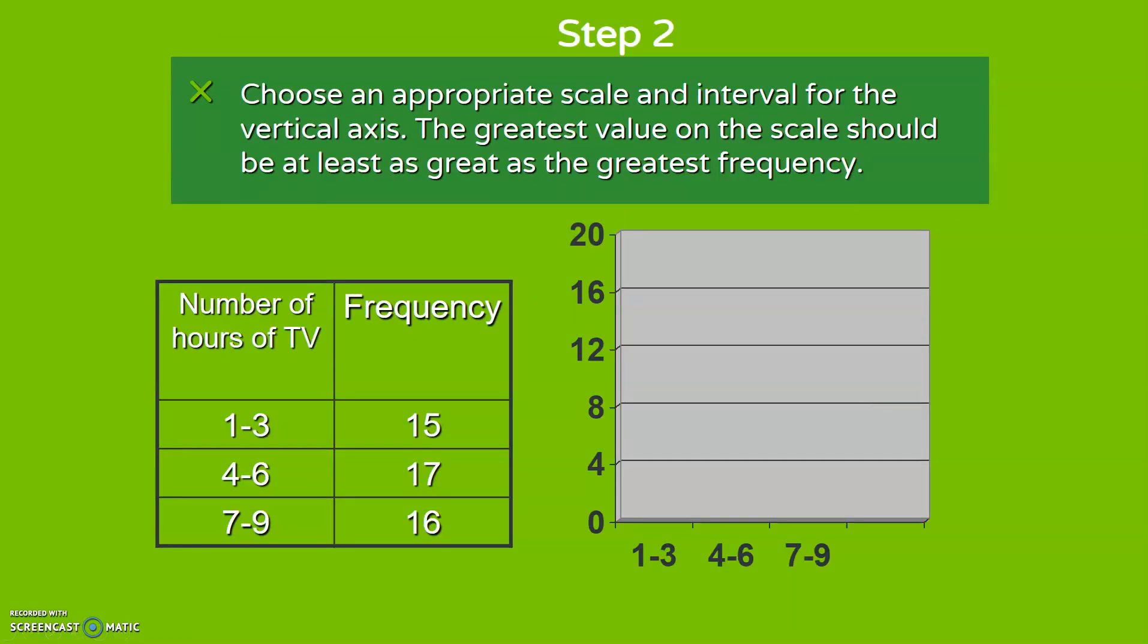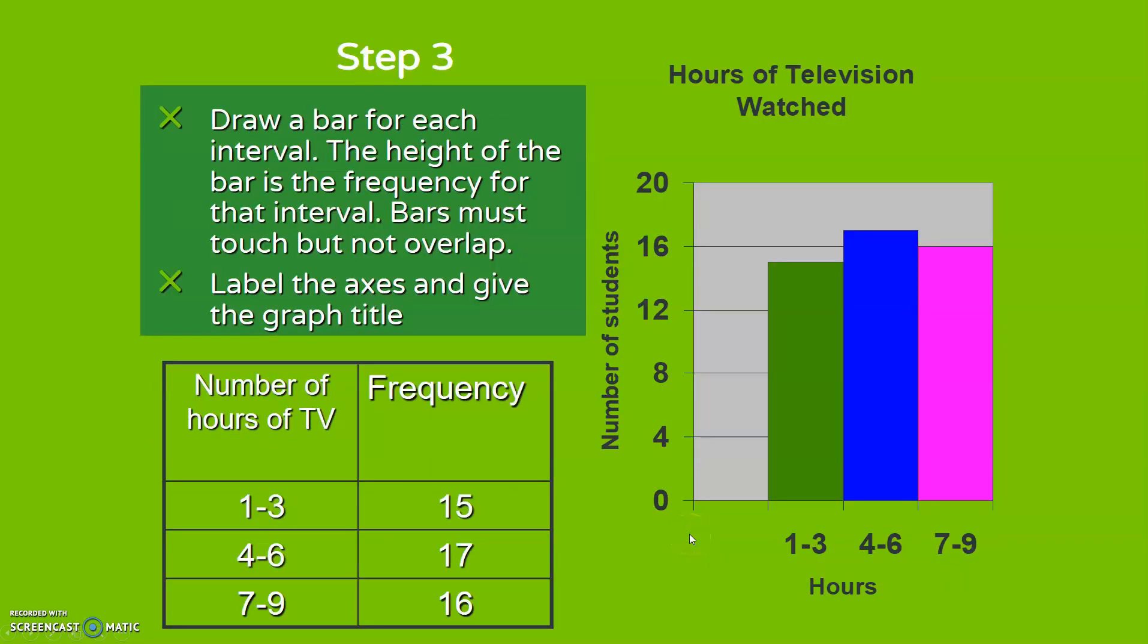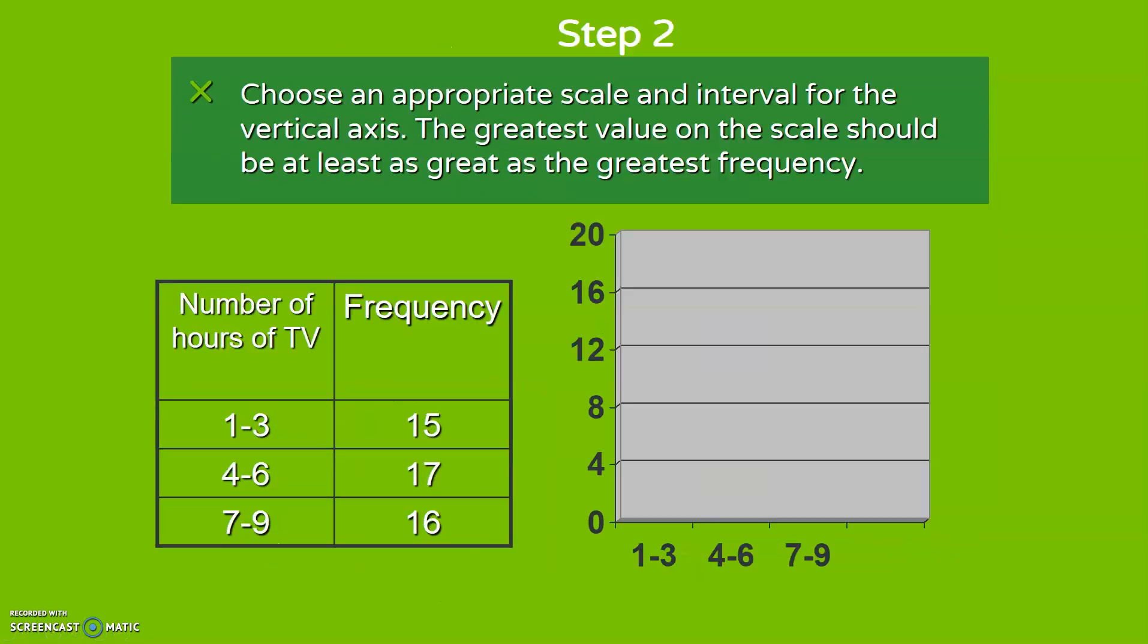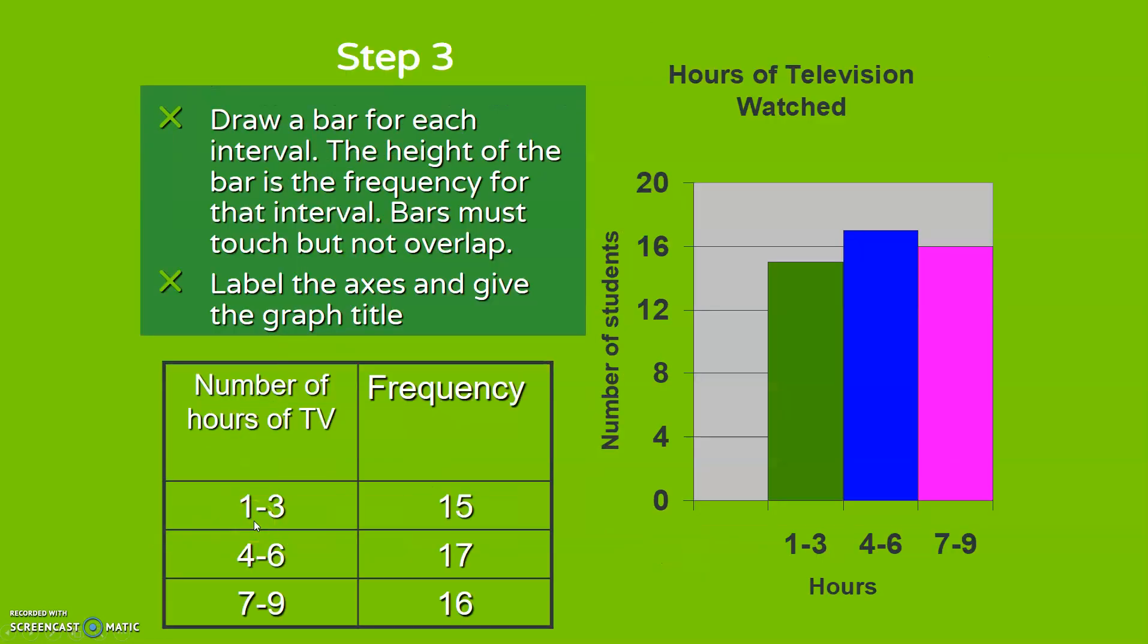Then we choose an appropriate scale and intervals for the vertical axis. We see that the number of frequencies here ranges no higher than 20, so I'm going to make it up here. The bottom axis is what we call our bins: one through three, four through six, and seven through nine. We then plot our data as a bar chart. The bars usually touch. We give the graph a title, hours of television watched. We can see that most teenagers watch about four to six hours of television.